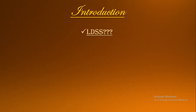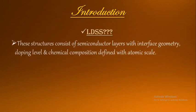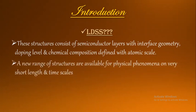So what actually is a low dimensional semiconductor structure? This structure consists of semiconducting layers with interface geometry, doping level, and chemical composition, and all these things are defined at the atomic scale. That's why we can relate it to low dimension. A new range of structures are available for physical phenomena to take place on very short length and short time scales. Because of this shorter length and reduced time scales, we consider it as a low dimensional semiconductor structure, and these systems are usually referred to as LDSS.